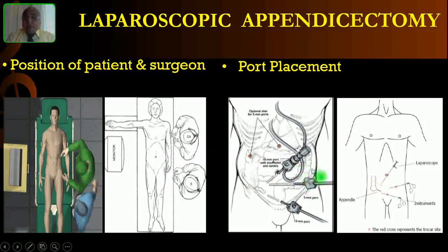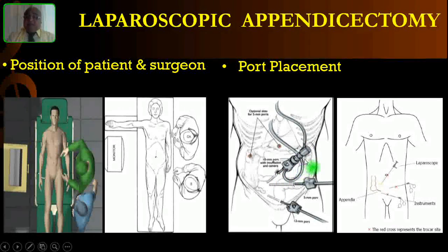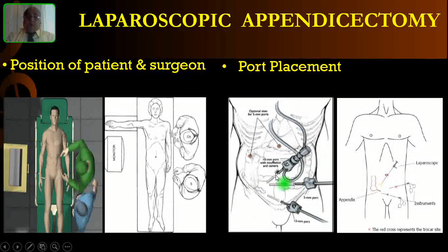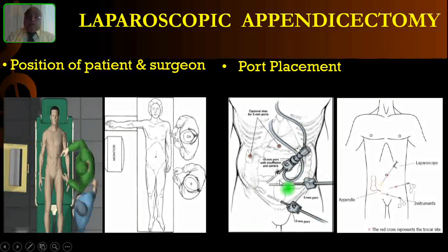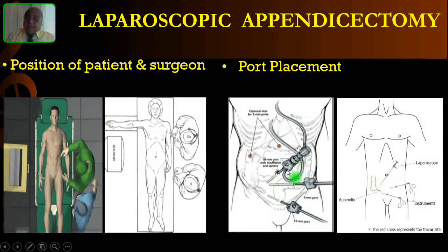Regarding port placement, the primary port is initially through the umbilicus. You can create pneumoperitoneum either by Veress needle — the closed method — or if the patient has previously undergone surgery, there may be adhesions inside, so it is better to resort to the open method using Hassan's cannula. Here you are seeing the primary port with the telescope and camera.